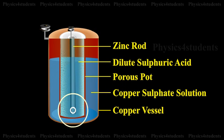The zinc rod reacting with dilute sulphuric acid produces positive zinc ions and two electrons.